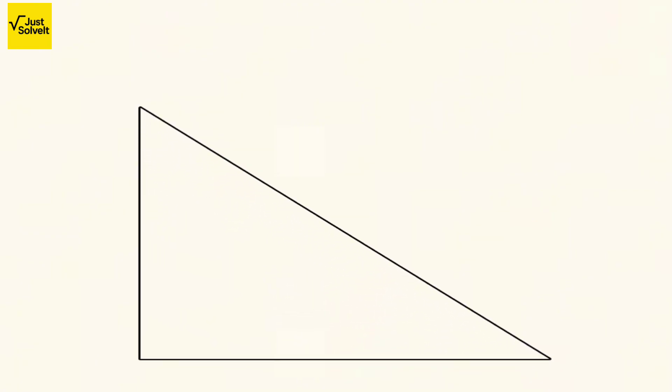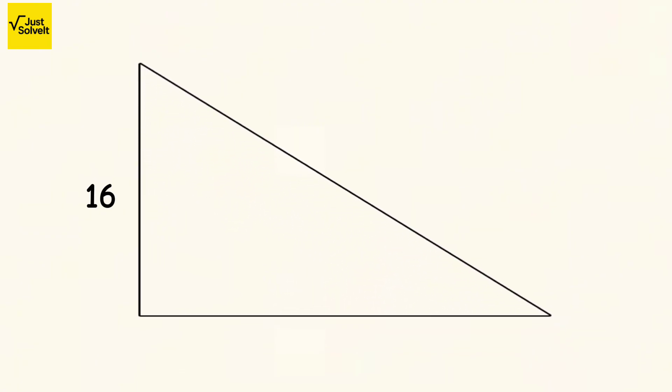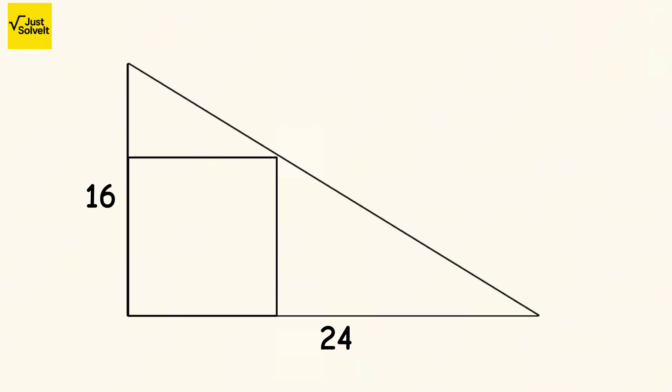We have a right-angled triangle with a height of 16 and a base of 24. Inside this triangle, there's a square such that one of its sides lies along the height, another along the base, and the top corner of the square touches the hypotenuse.